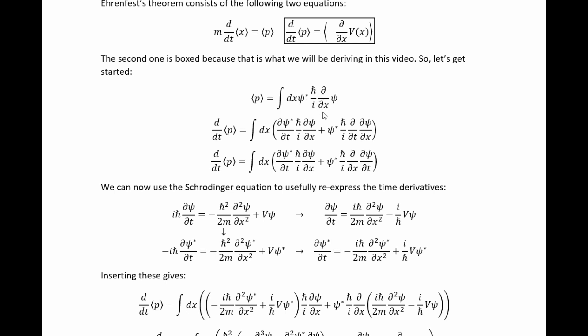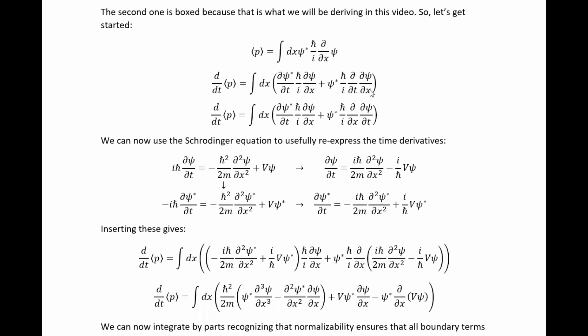h-bar over i d over dx, is the value of the momentum operator in the position basis. So let's take a time derivative of this. We just directly apply the time derivative to this quantity and use the product rule, and this is the result we get. Now we can recognize that the time and position partial derivatives commute and write it like this.